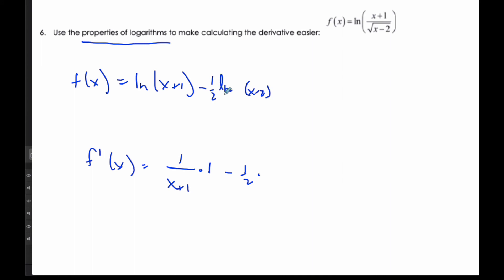Well, 1/2 times the derivative of ln(x) is 1 over (x-2), times the derivative of that, which is 1. And so when I put it all together, I get 1 over (x+1) subtract 1 over 2(x-2) is my derivative. Using properties is a helpful trick.